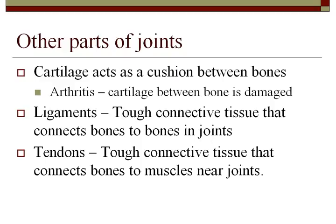The last things we'll talk about today are some other parts of joints. Cartilage, which we discussed at the beginning of this lecture, acts as a cushion between joints. Arthritis is a very common disorder among middle-aged and older adults — it's what happens when cartilage between the bones is damaged. Ligaments are tough connective tissues that connect bones to bones and joints, while tendons are tough connective tissues that connect bones to muscles near joints. That's the end of our lecture. Thank you very much for listening.